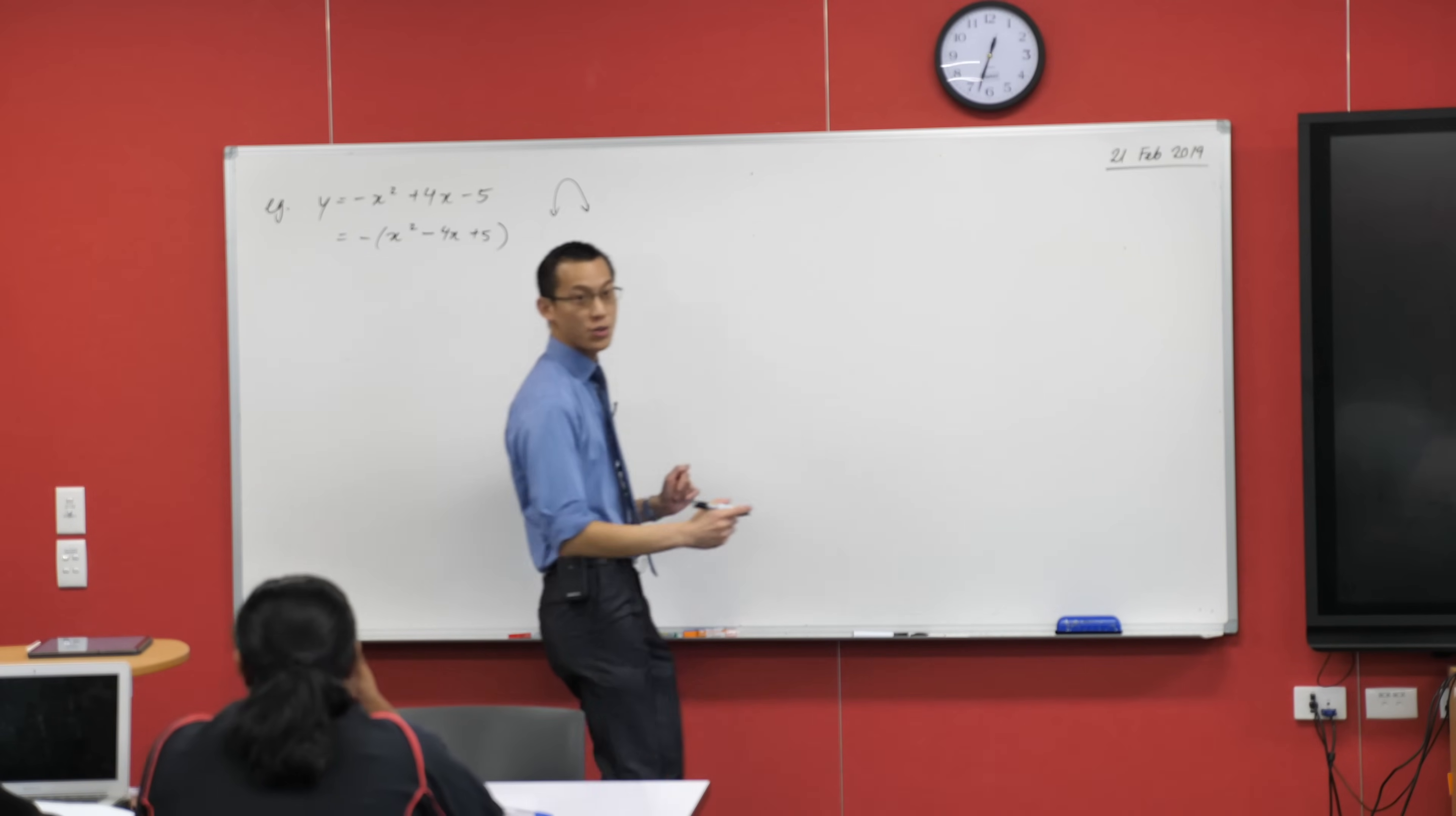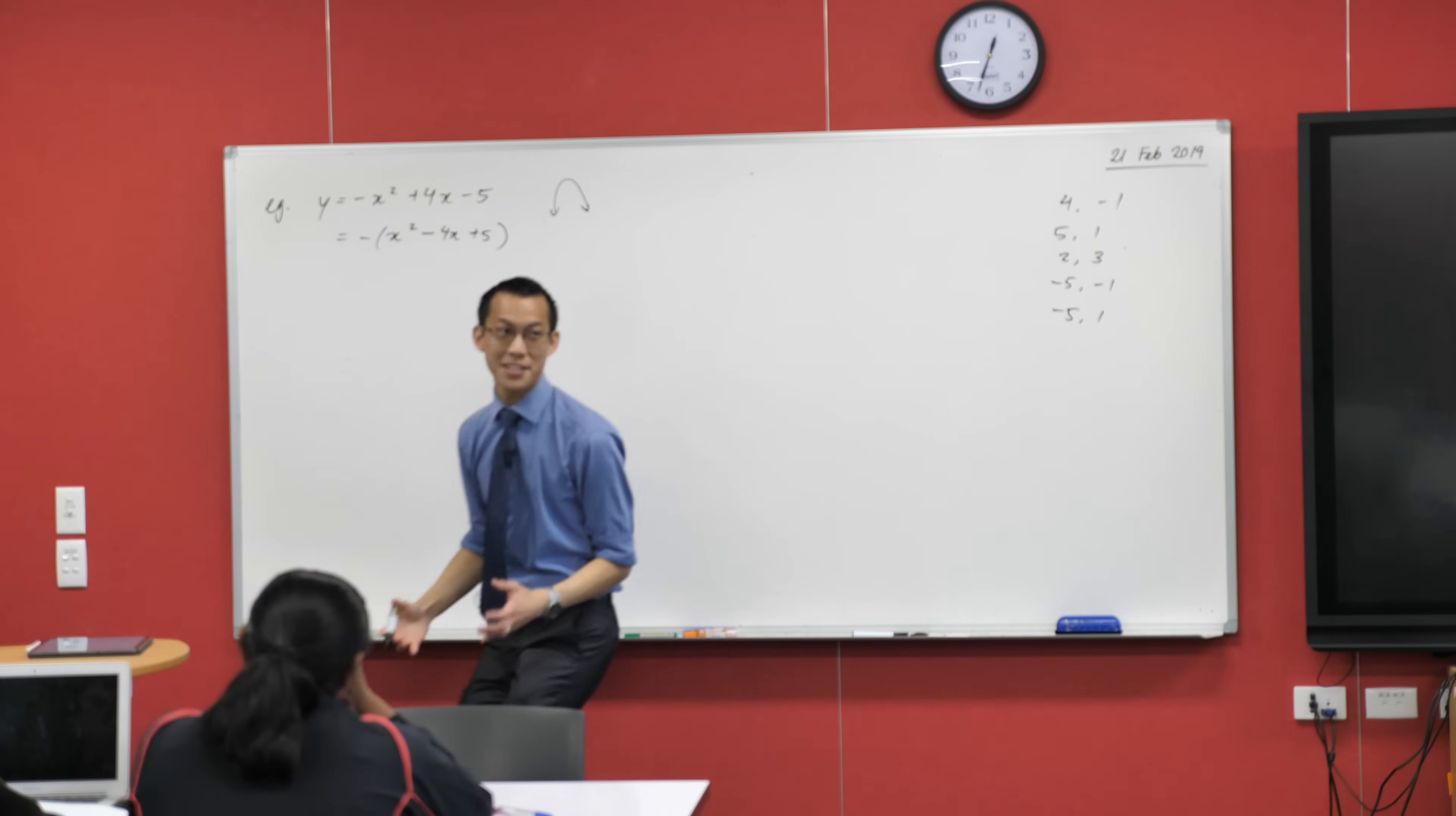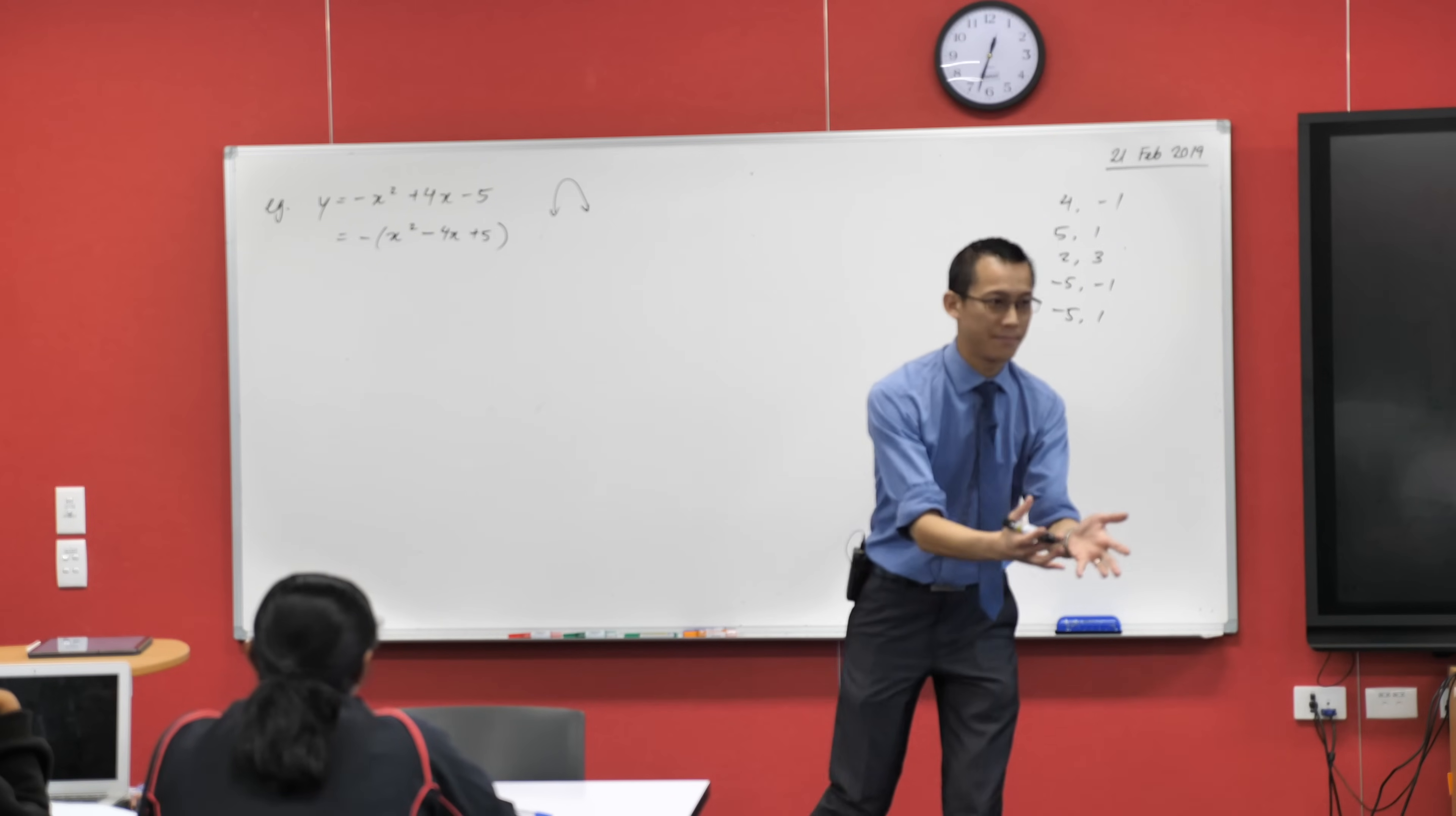I'm going to write down some things that I hear you say. I heard four and minus one. I heard five and one. I heard two and three. Minus five and minus one. Minus five plus one. Did I miss any options? Do any of these work? We have everyone's options here and I'm pretty confident to say I don't think any of these work, do they? They all don't work. What does that mean?